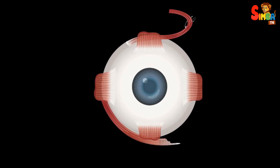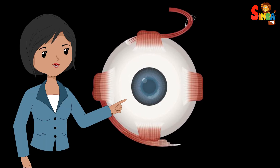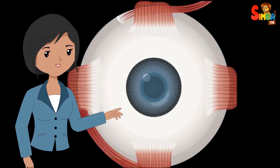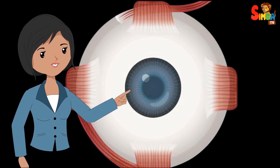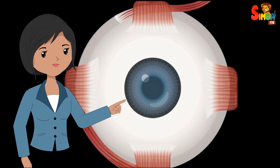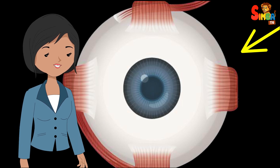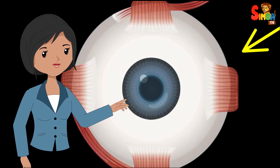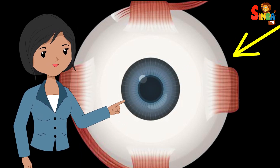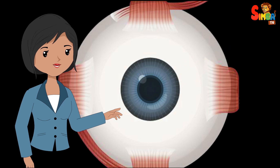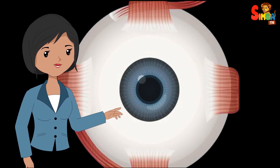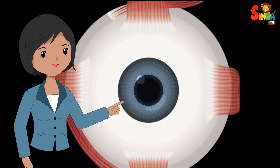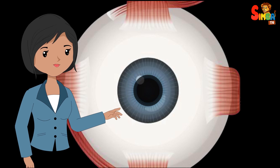Adaptation: When transitioning from a well-lit environment to darkness, our eyes need time to adjust. This process, called dark adaptation, involves the rods becoming more sensitive to light over time. During this adaptation period, vision may be extremely limited until our eyes adjust.